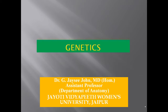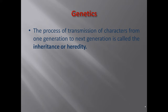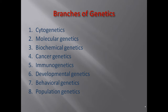Today we will discuss genetics. Genetics is a very essential part of all the mechanisms that happen in our body. Genetics is the process of the transmission of characters from one generation to the next generation, and it is called inheritance or heredity. It is the most important feature describing how a particular characteristic of an animal is carried to other generations through genes.